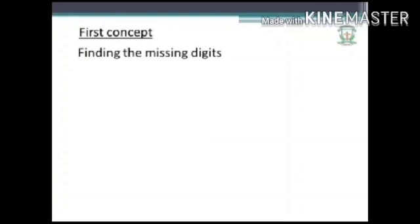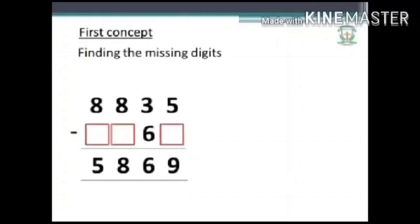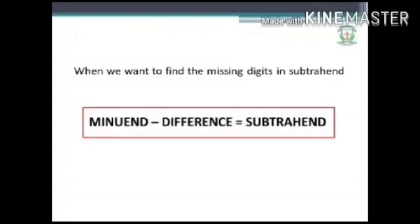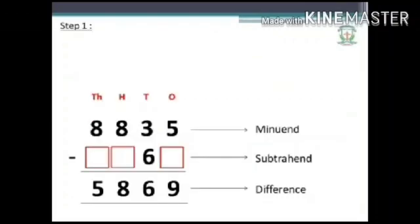Let us take up the first concept: finding the missing digits. 8835 is called the minuend, 5869 is the difference, so we need to find out the subtrahend. When we want to find the missing digits in the subtrahend, follow the formula: minuend minus difference is equal to subtrahend.